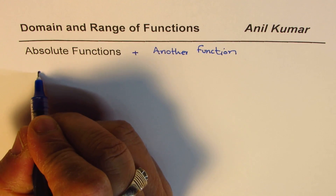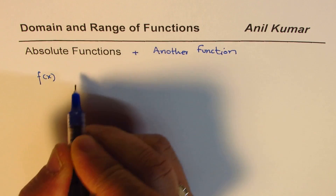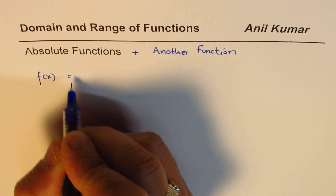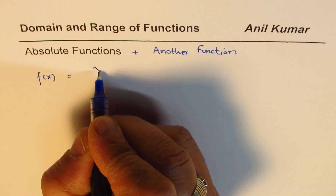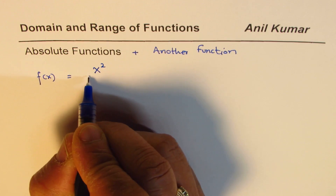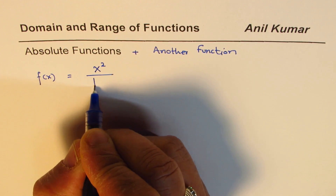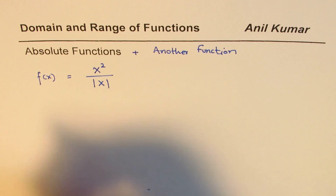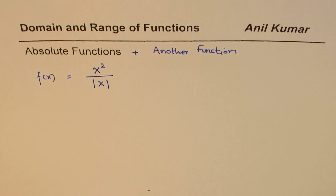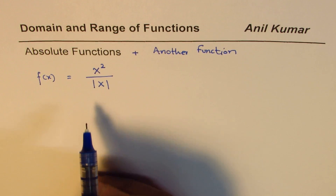The first example I want to take is a combination with the square function — a parabola — which is x squared divided by absolute x. So I'm keeping this absolute x in the denominator, and we'll see what the domain and range of this particular function are.